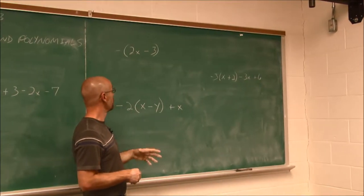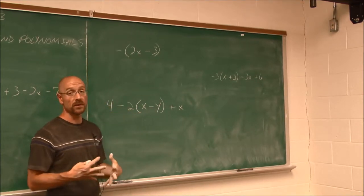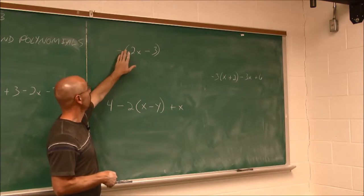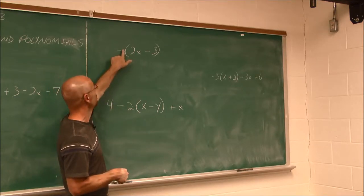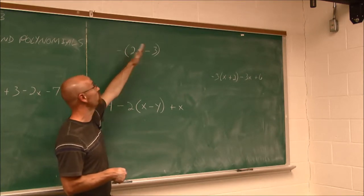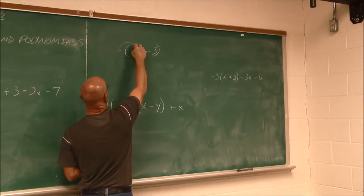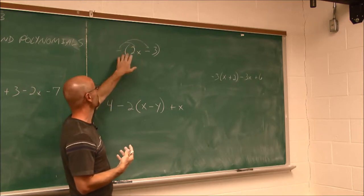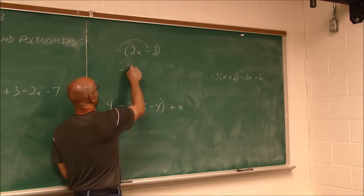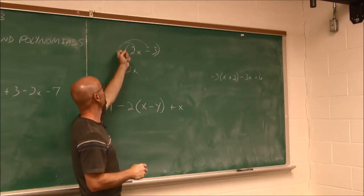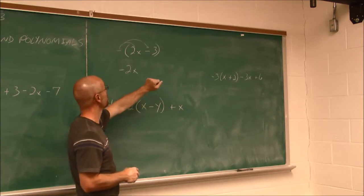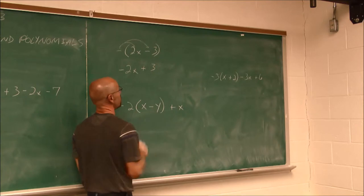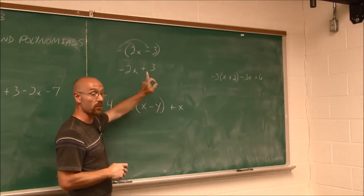Sometimes we'll have parentheses where we have operations within them. If we recall the distributive property, we can eliminate these parentheses. We see this negative — I think of it as a negative 1 because it's like being the coefficient of what's in those parentheses. Distributing a negative is multiplying by negative 1. The opposite of 2x is negative 2x, and the opposite of negative 3 is positive 3, because a negative times a negative gives a positive.